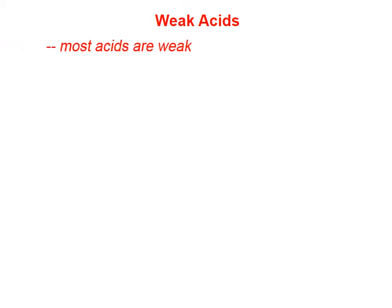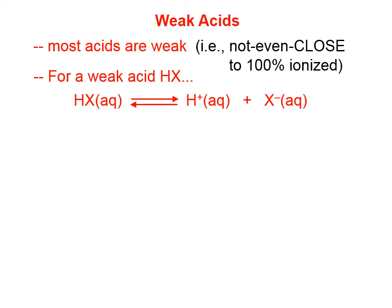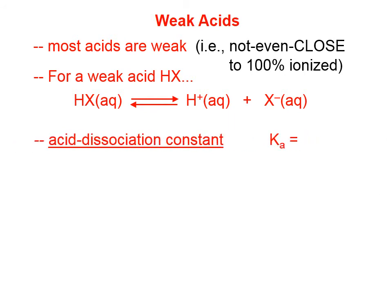We're now going to be exploring weak acids in some detail. Most acids are weak, and when we say a weak acid, we mean that it's not even close to 100% ionized. For a weak acid, we write an ionization equation with the two-headed arrow, and we can write what's called an acid dissociation constant, symbolized Ka, which is simply the equilibrium constant written for this equation for a weak acid.